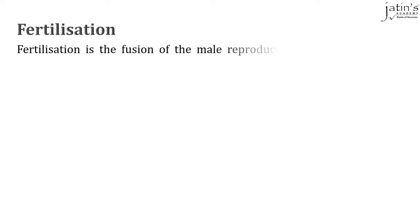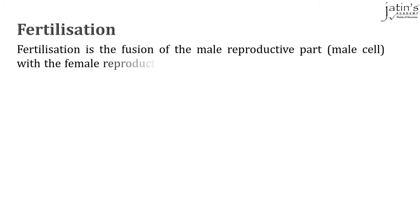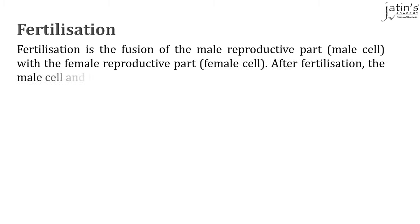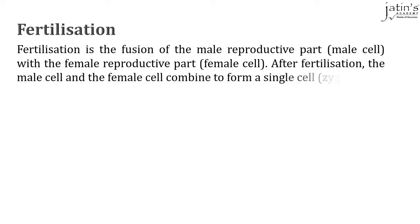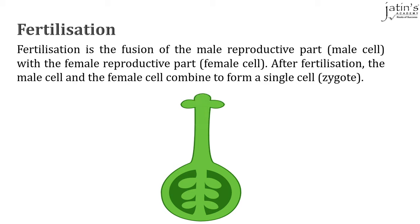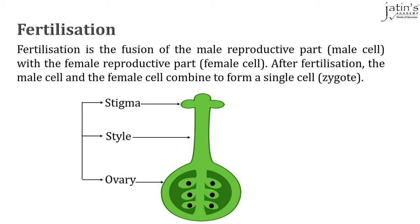Next comes fertilization. Fertilization is the fusion of the male reproductive part with the female reproductive part. After fertilization, the male cell and the female cell combine to form a single cell called the zygote. In a typical carpel or pistil, the ovules inside contain the egg cells. The stigma is the sticky tip on top, the style is the thin tube that connects the stigma to the ovary, which contains the ovules and the egg cells — together forming the carpel, the female part.